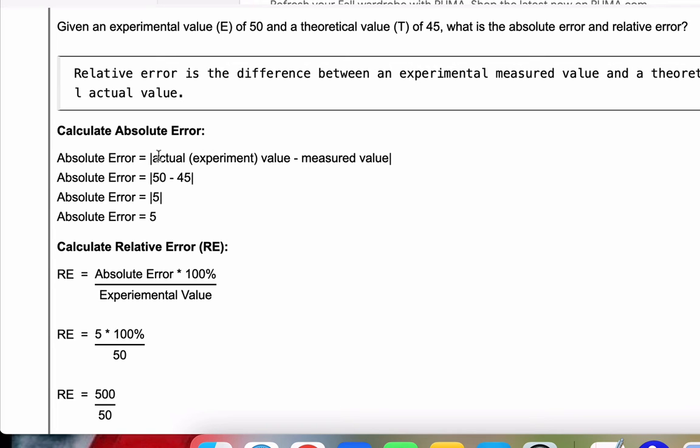And that is just the absolute value of the experimental value minus the measured value. And so we plug in 50, 45, absolute value 5, we get 5.